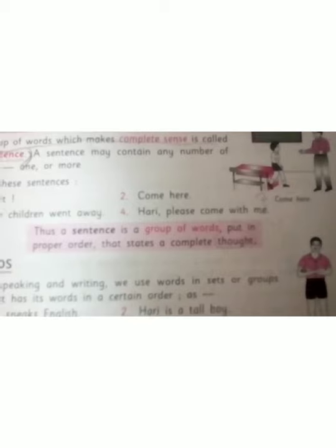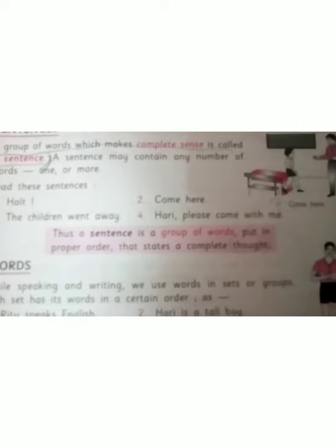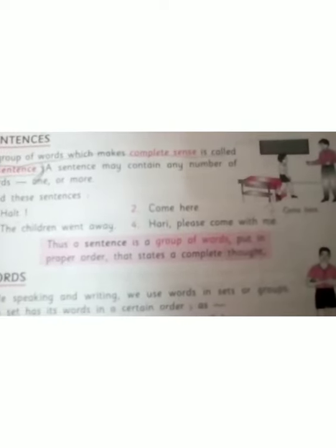How will you define a sentence? A sentence is a group of words put in proper order that states a complete thought. It means it is a group of words which is put in proper order and gives a complete meaning.